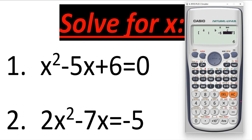Let's press equals to get the result. The quadratic equation always gives two solutions — two values of x. The first value of x is positive 3, and the other value of x is positive 2. These two values satisfy this equation.